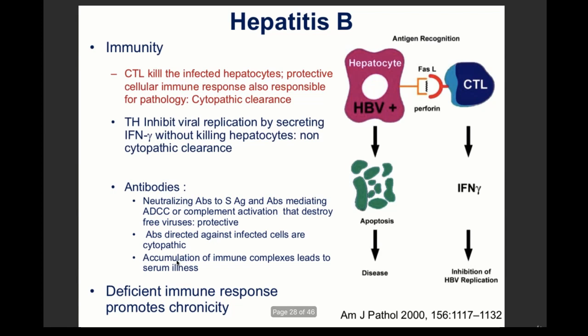The immune response to hepatitis B includes the cytotoxic T cell response for cytopathic clearance, interferon gamma for protecting other hepatocytes, and neutralizing antibodies. However, the virus can escape antibodies, and immune complex accumulation can cause serum sickness and joint inflammation.